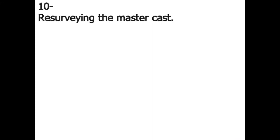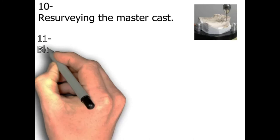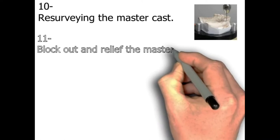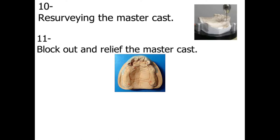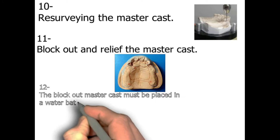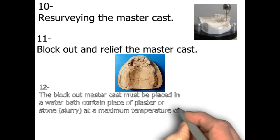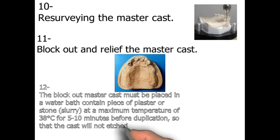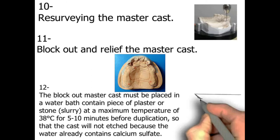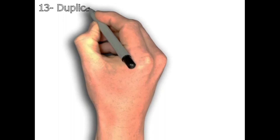Step number ten: making the master cast. Step number eleven: block out and relieve the master cast. Step number twelve: the blocked-out master cast must be placed in a water bath containing plaster or stone at a maximum temperature of 38 degrees Celsius for 5 to 10 minutes before duplication, so that the cast will not etch because the water already contains calcium sulfate — that's a laboratory step.